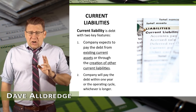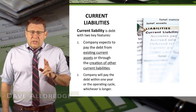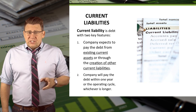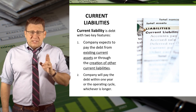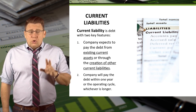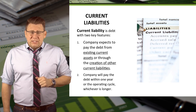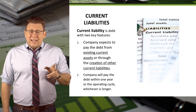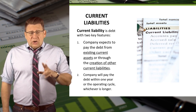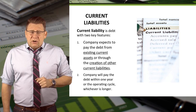Current liabilities are debts with two key features. The first is that a company expects to pay the debt from existing current assets or through the creation of other current liabilities. The second is that the company will pay the debt within one year or one operating cycle, whichever is longer.